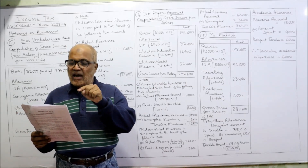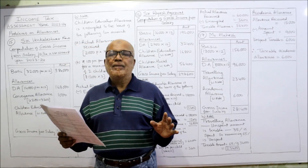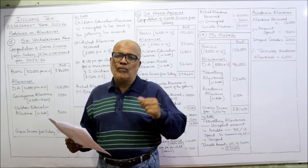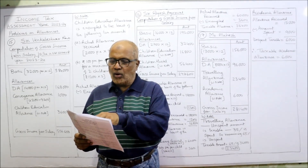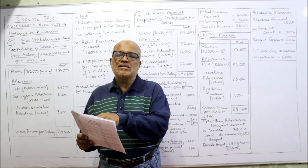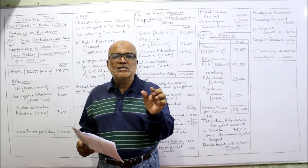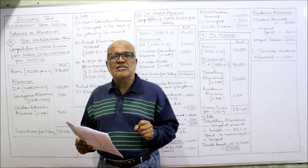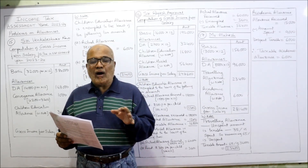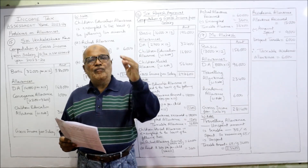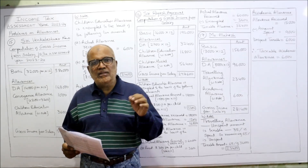Two new allowances: travelling allowance and academic allowance. The provision of Income Tax Act — travelling allowance given by employer to employee: unspent amount is taxable. He got 3,000 per month, meaning 36,000 per annum. 35% is spent, so the remaining 65% is unspent and taxable. For academic allowance — 15,000 received per annum, actual amount spent is 9,000, so unspent amount is 15,000 minus 9,000 equals 6,000, which is taxable.